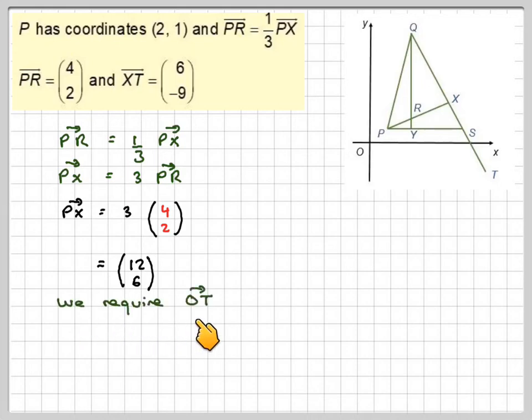Right, we need to find OT. So we need to go from O to T. We can do this by going this route: O to P, P to X, which I now have, and then X to T, which I'm also given in the question.